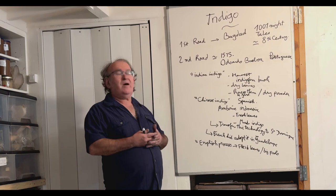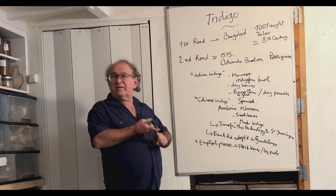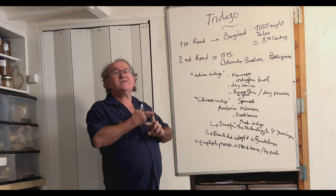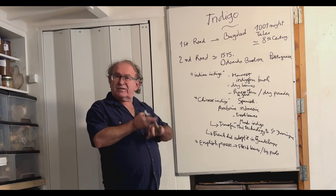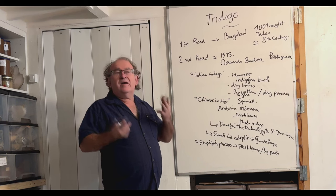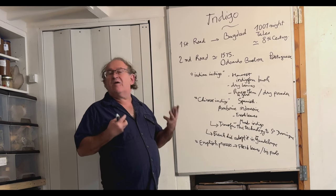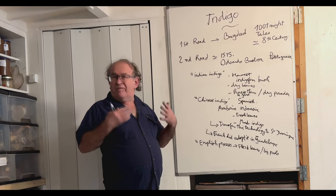Because they were using Isatis indigotica, they were using Persicaria tinctoria, they were using Strobilanthes cusia, and also in the south Indigofera tinctoria. So the four main cultivated indigo plants at big scale, I mean, were already developed in China.